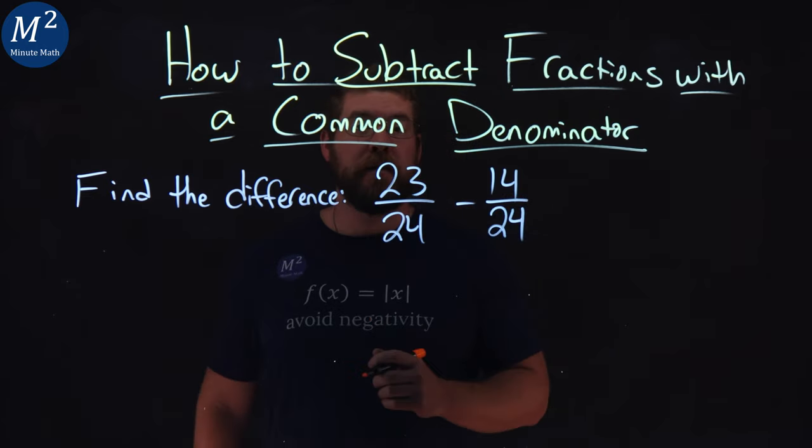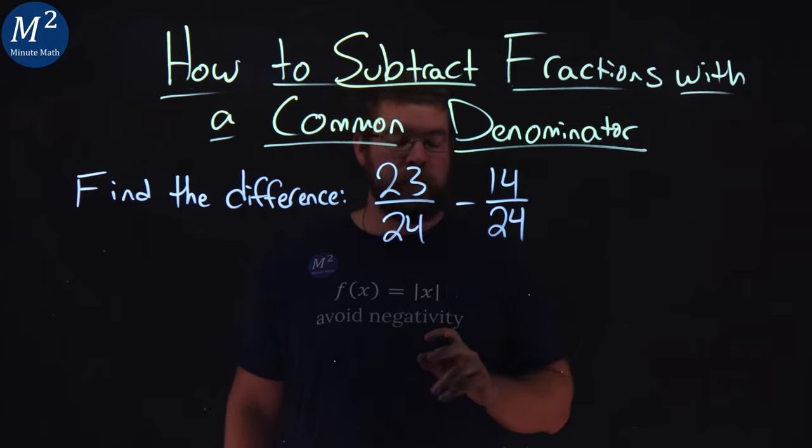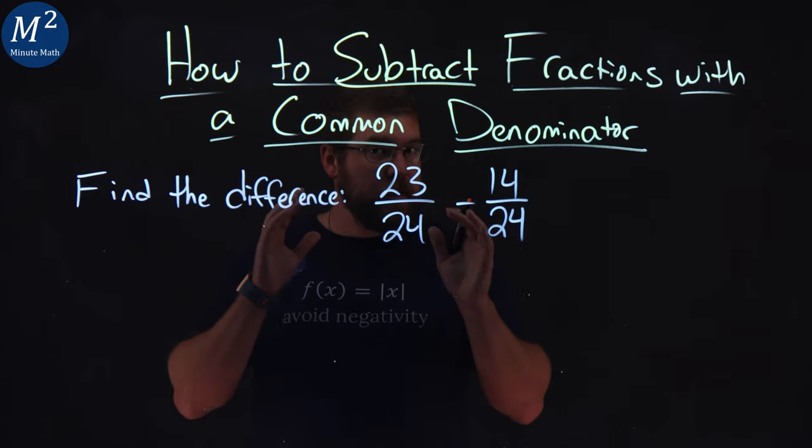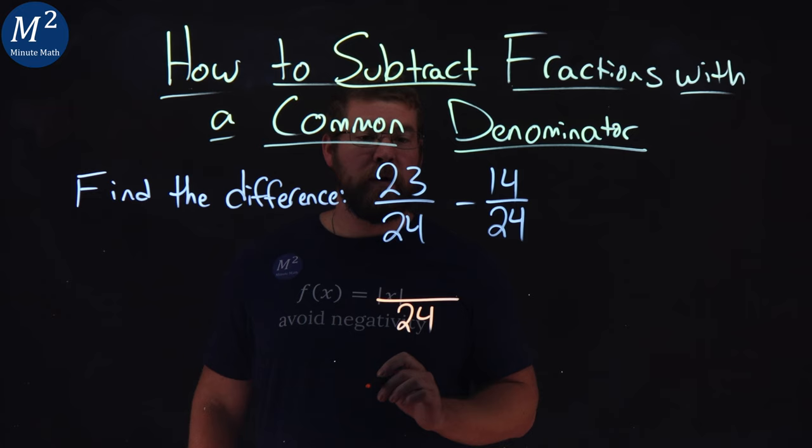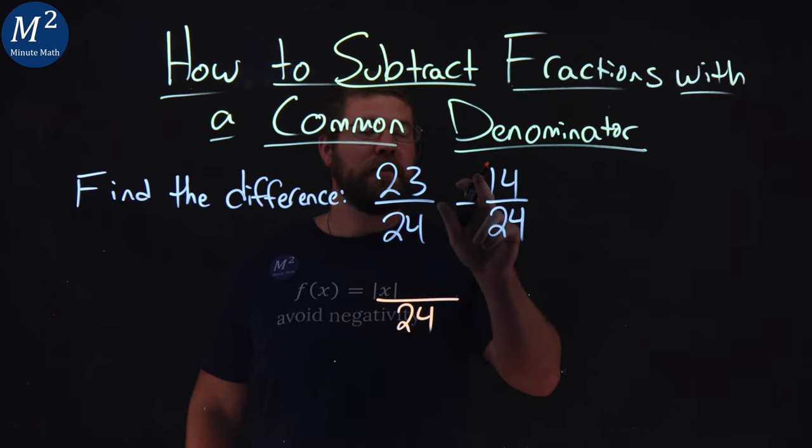Well, like the problem states, we have a common denominator, 24. Since we have a common denominator, we can leave that in the denominator, the 24, and we can subtract the numerators.